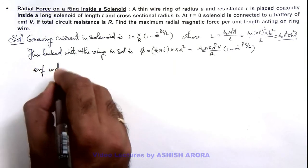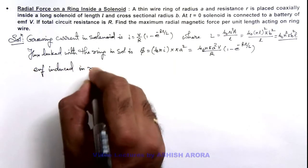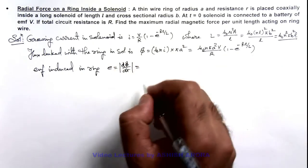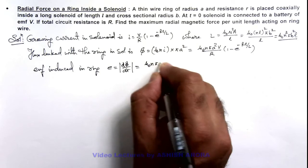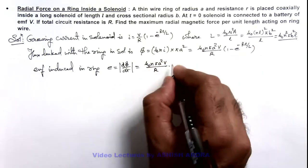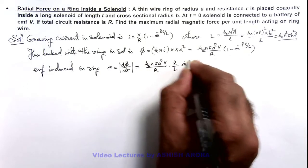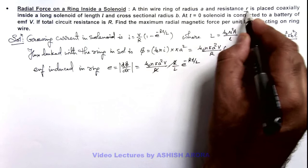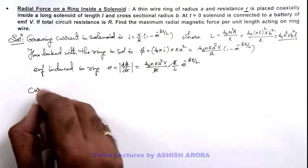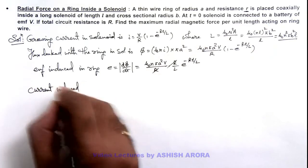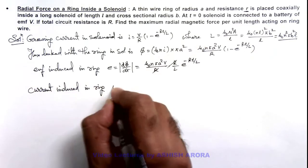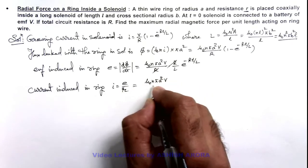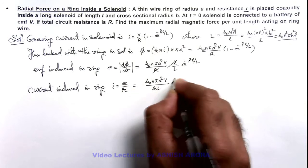Differentiating this flux gives us the EMF induced in the ring, which is |dΦ/dt| = μ₀n·πa²·(V/R)·(R/L)·e^(-Rt/L). Here R cancels out. Since the resistance of this ring is r, the current induced in the ring is i_r = EMF/r = μ₀n·πa²·V/(rL)·e^(-Rt/L).